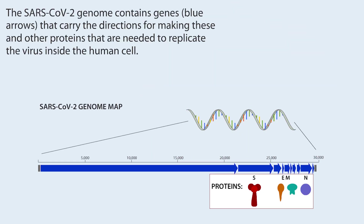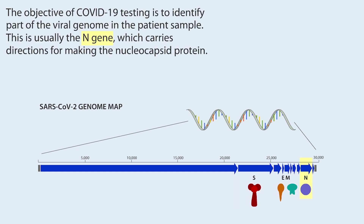The SARS-CoV-2 genome contains genes that carry the directions for making these and other proteins needed to replicate the virus inside the human cell. The objective of COVID-19 testing is to identify part of the viral genome in the patient's sample. This is usually the N-gene, which carries directions for making the nucleocapsid protein.